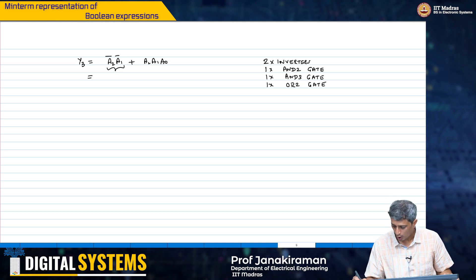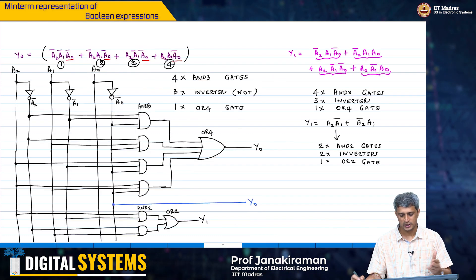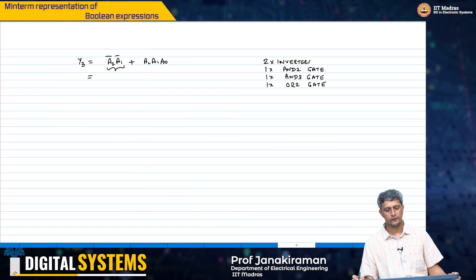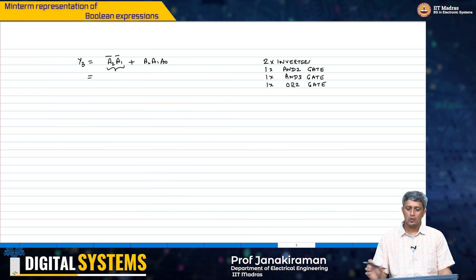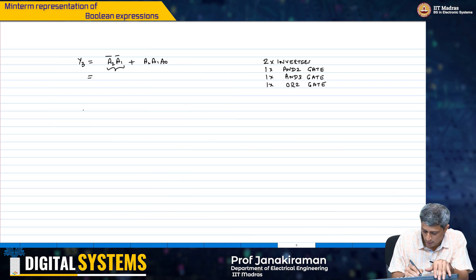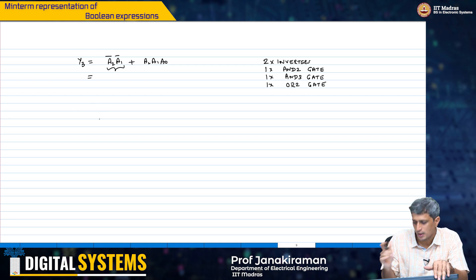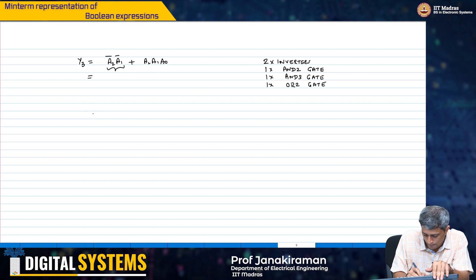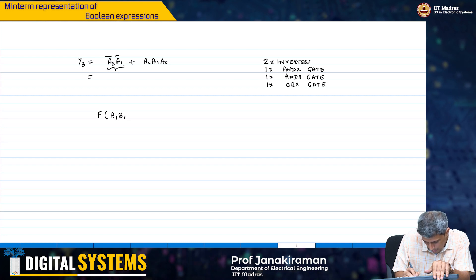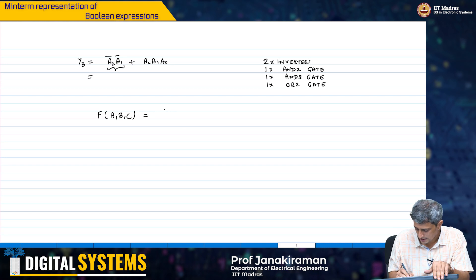I urge you to draw out the implementation as shown here for y2 as well and convince yourself that the expressions are all correct. So now, maybe what we can do is let us look at one more example because I am now not going to start with the truth table. I am going to start directly with the alternate representation. I am going to say, implement a function of A, B, C as M0...